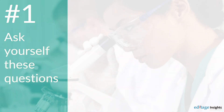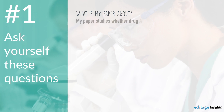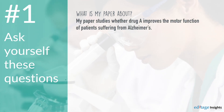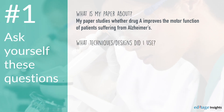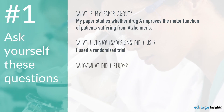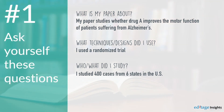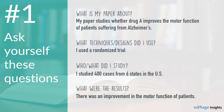Step 1: Ask yourself these questions. What is my paper about? For example, my paper studies whether Drug A improves the motor function of patients suffering from Alzheimer's. What technique or design did I use? I used a randomized trial. Who or what did I study? I studied 400 cases from 6 states in the U.S. And what were the results? There was an improvement in the motor function of patients.